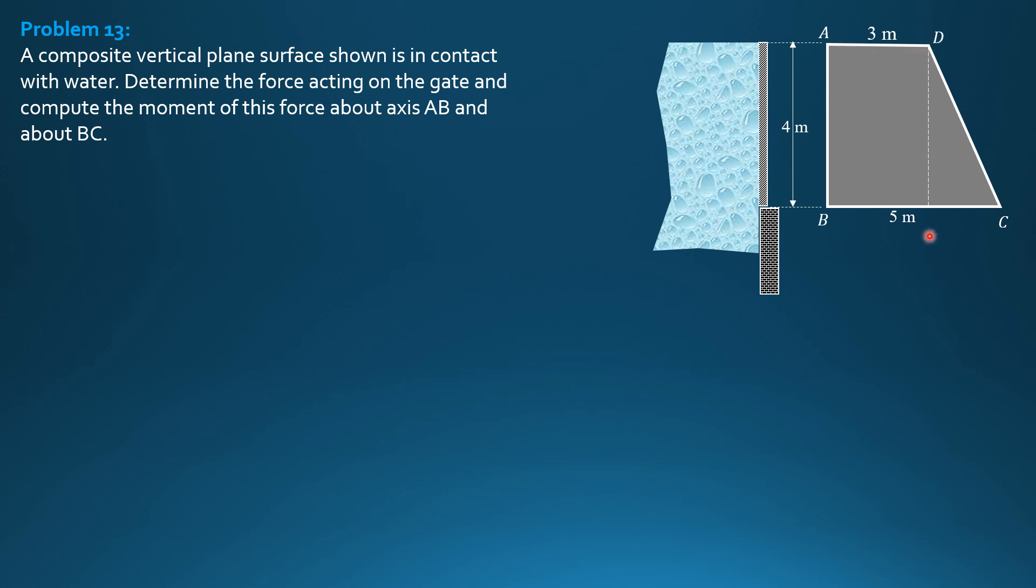And the other one is triangular: 2 meters base, 5 minus 3 equals 4 meters height.